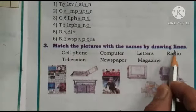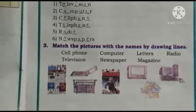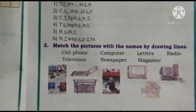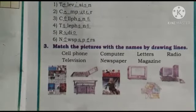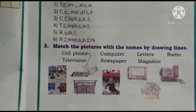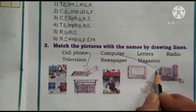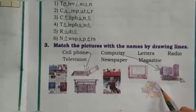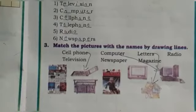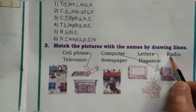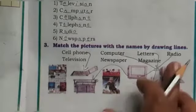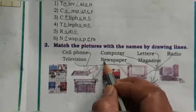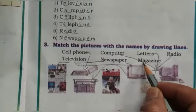Match the pictures with the names by drawing lines. Here some pictures are given, and here some words are given — you must match them: Cell phone, Computer, Letters, Radio, Television, Newspaper, Magazine. Cell phone — here is the cell phone. Computer — this one is computer. Letters — here are some letters. Radio — here it is, radio. Television — television means TV. Newspaper — where is the newspaper? Magazine — here it is, magazine.